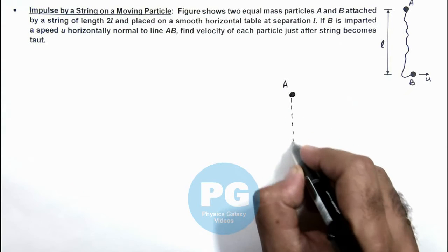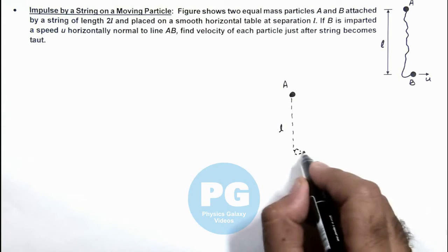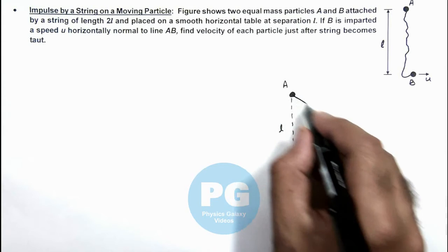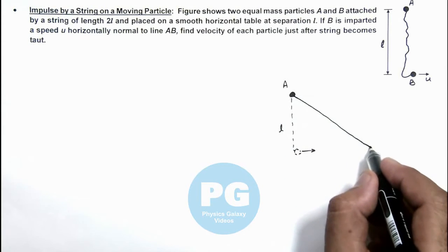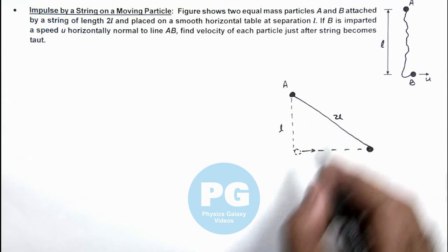And at a distance l, if this is the position of B and it moves, then it will become tight, the string will become tight when this length will be 2l, that is the length of string.